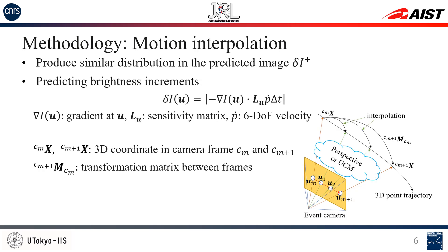When predicting brightness increments from the 3D model, we calculate the increments from the image gradient, sensitivity matrix, and the six degrees of freedom velocity. To produce similar accumulation blur as the desired image, we propose motion interpolation. When a point moves from one position to another in 3D space, its projection on the image plane has a 2D trajectory. Instead of calculating the increments only at the final pixel u_{n+1}, we interpolate the motion by predicting the increments at a series of intermediate pixels on the 2D trajectory. The intermediate pixel number is determined by the trajectory length.